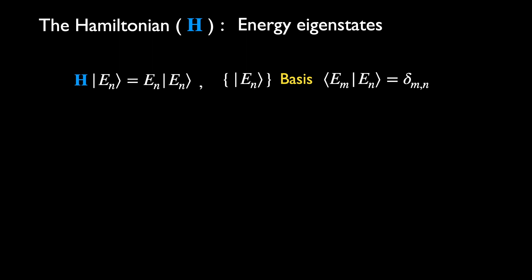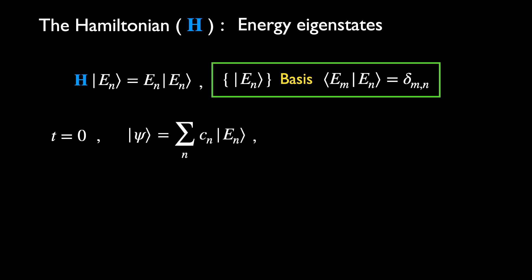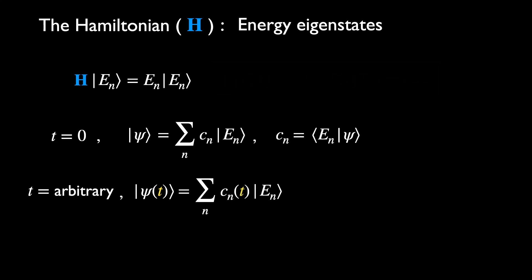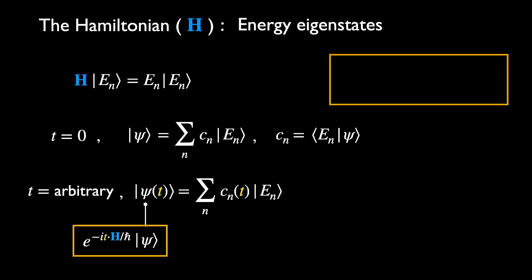One reason why we need to find the eigenstates and eigenvalues of the Hamiltonian is that it allows us to describe the time evolution of an arbitrary state in a simple way. Suppose at time t=0 the system is in some initial state |ψ⟩, expressed in the basis |E_n⟩. Then at some arbitrary later time, the system evolves into |ψ(t)⟩, which can be expressed in the same basis, except the amplitudes C_n(t) must now be different. |ψ(t)⟩ is given by the time evolution operator acting on the initial state, and satisfies Schrödinger's equation.